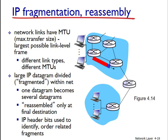Because IP is an unreliable service, one or more of the fragments may never arrive at the destination. For this reason, in order for the destination host to be absolutely sure it has received the last fragment, the last fragment has a flag bit set to zero, whereas all other fragments have this flag bit set to one. Also, in order for the destination host to determine whether a fragment is missing and to reassemble the fragments in their proper order, the offset field is used to specify where the fragment fits within the original datagram. This explains those three fields discussed in the last lesson: identifier, flag, and offset.